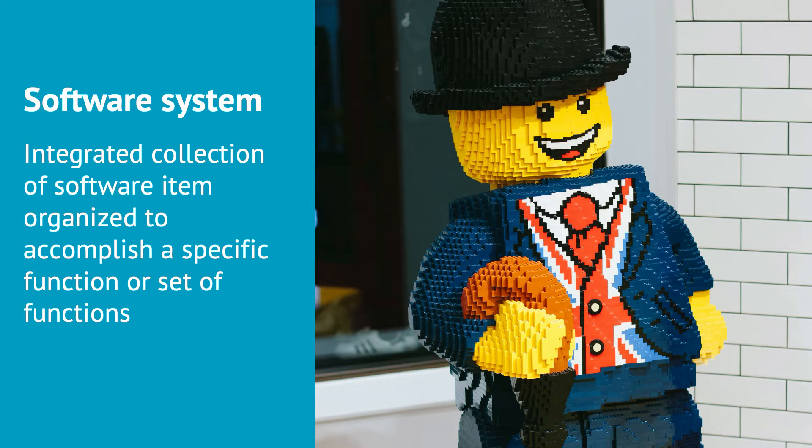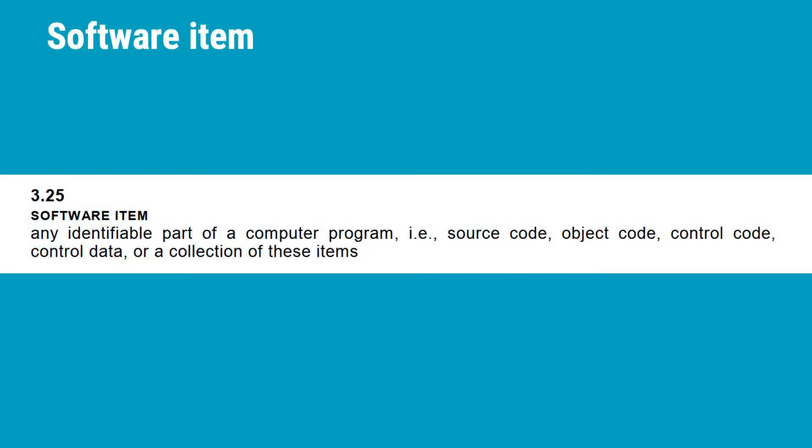What is an item then? A software item is defined as any identified part of a computer program, such as source code, object code, control code, control data, or a collection of these items. Apparently, anything can be called a software item, so as a definition it is not very helpful. But on the bright side, you're free to define software items in any way you find appropriate. How big or small an item can be is up to you to decide in your software architectural work.